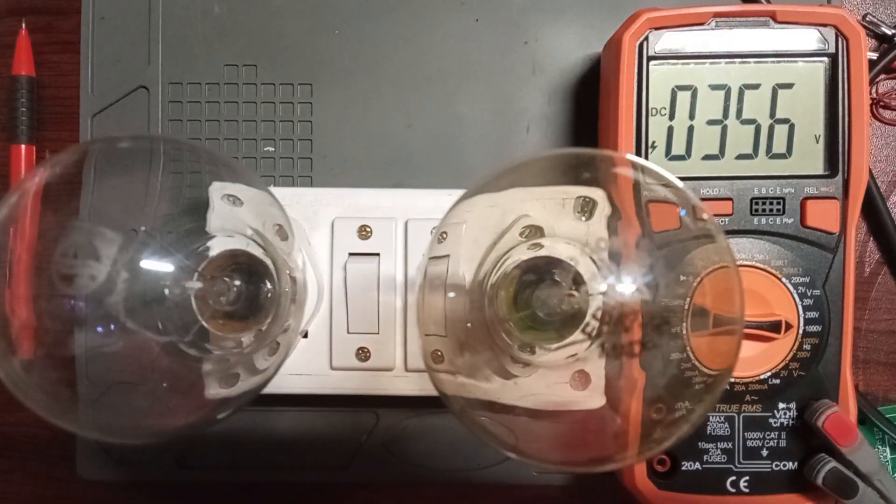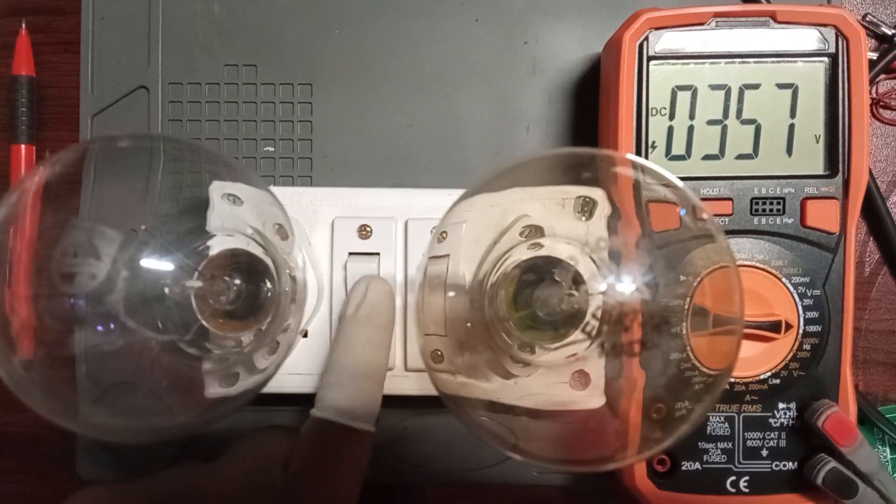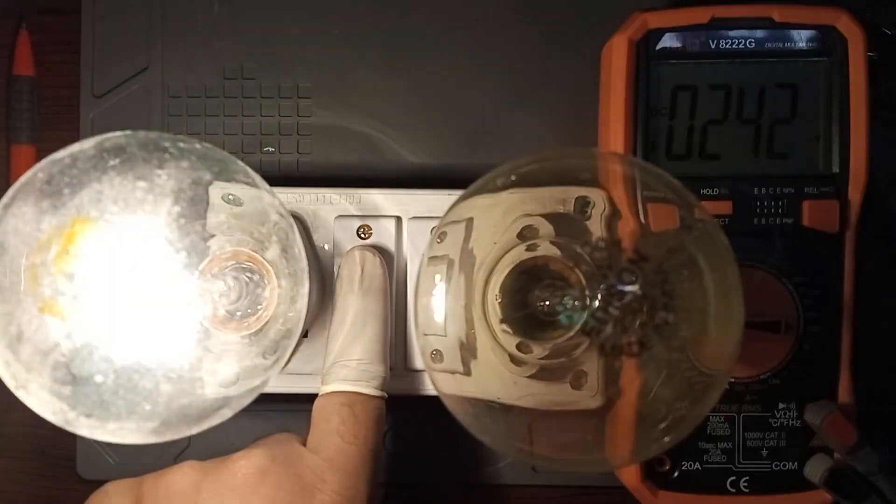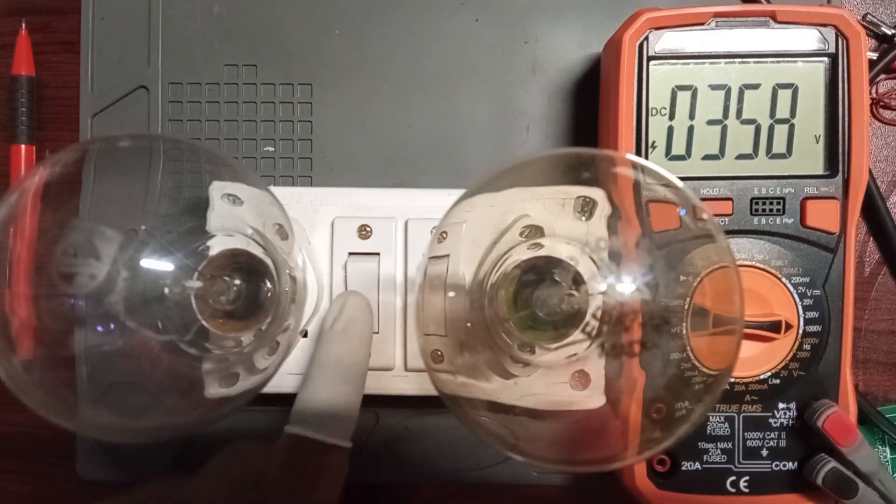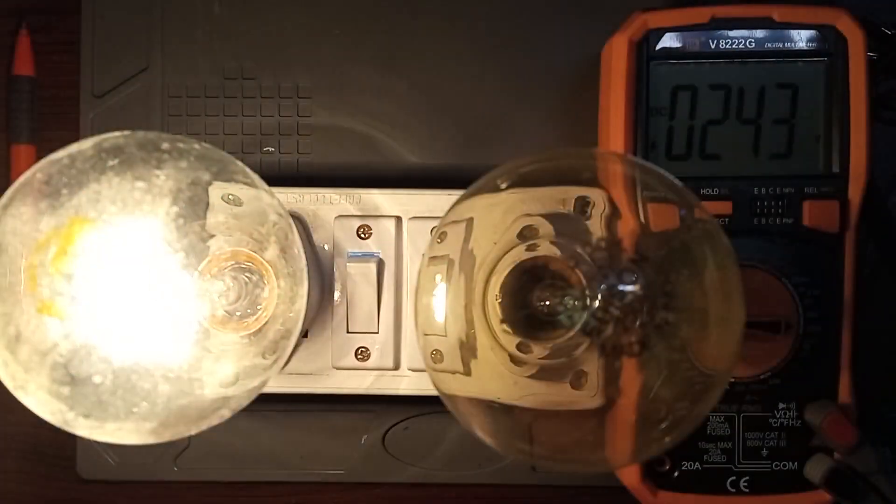This happens because in DC there's no zero crossing, unlike AC. When the switch is opened slowly from a closed state, there are small arcs. These arcs create a conductive path, which is essentially like a soup of free electrons and ions, allowing the voltage to jump across the air.